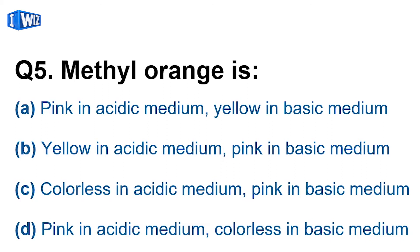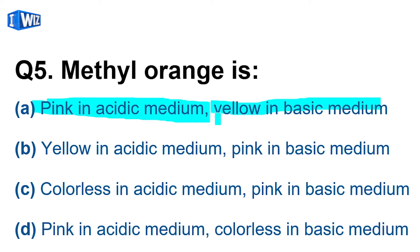Question number 5: methyl orange is pink in acidic medium and yellow in basic medium. This is important. In acidic medium, methyl orange gives pink color, and in basic medium, methyl orange gives yellow color — not orange, despite its name.